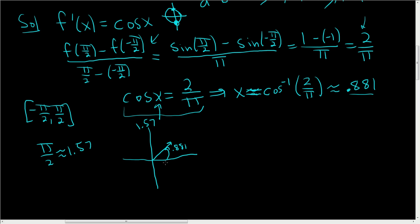So where else is the cosine function positive, right? Because this is a positive number. Where else is it positive on the unit circle? Well, cosine is the x-coordinate on the unit circle. So it's positive over here. And so the other angle will be negative 0.881.